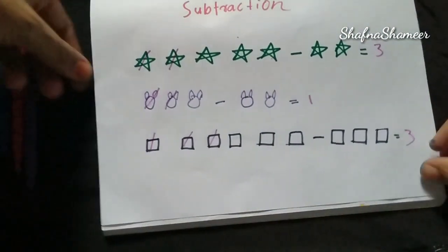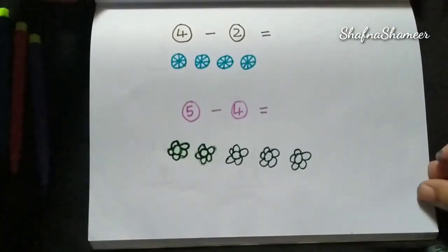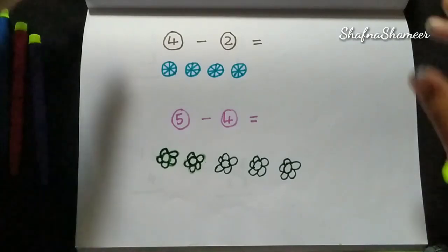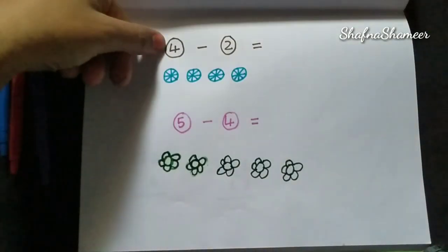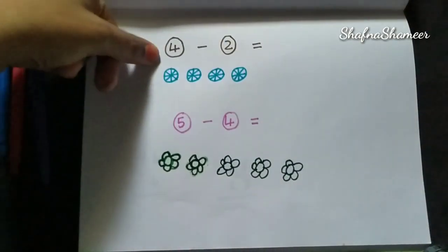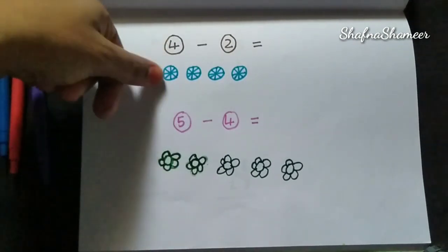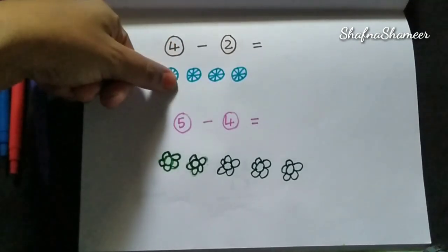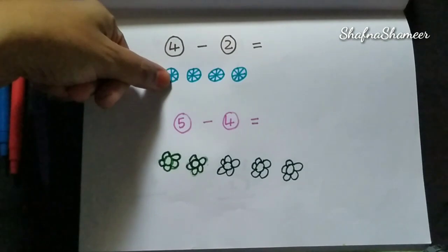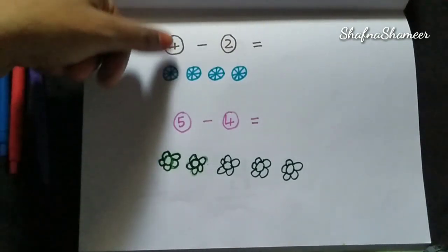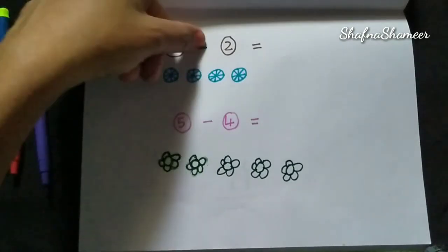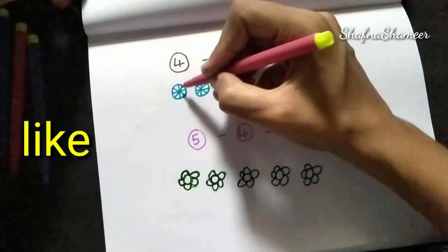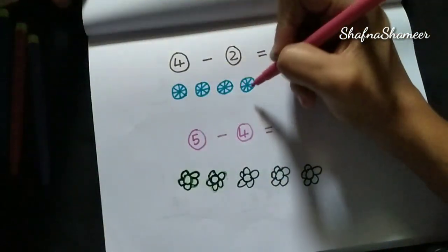This is how to do this. We have pictures, we have numbers. We have numbers and pictures together. We have a number 4 and we have a number 2.